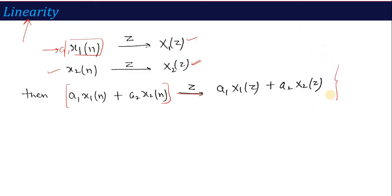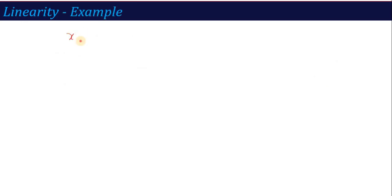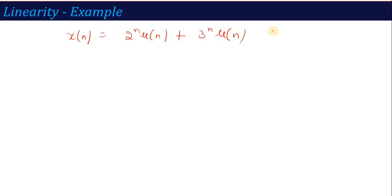For the application of linearity property — in what kind of question this property applies — let me give you an example. Suppose you have signal x(n) = 2^n * u(n) + 3^n * u(n) + 5 * u(n). So its Z-transform will be: the Z-transform of each signal added together.